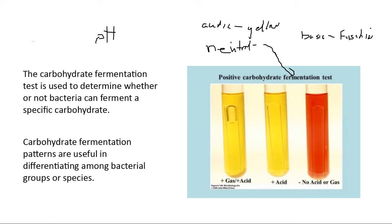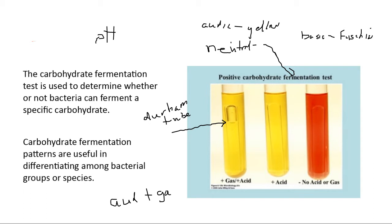You'll notice there's a little inverted tube in the test called the Durham tube — D-U-R-H-A-M. The Durham tube's sole purpose is to capture metabolic gas. In order to have a true fermentation, you have to have acidic conditions and the formation of gas. Gas will only be produced in acidic conditions. If gas is produced, it will be captured in the Durham tube, causing a displacement of liquid and leaving a headspace, which indicates metabolic gas was formed.